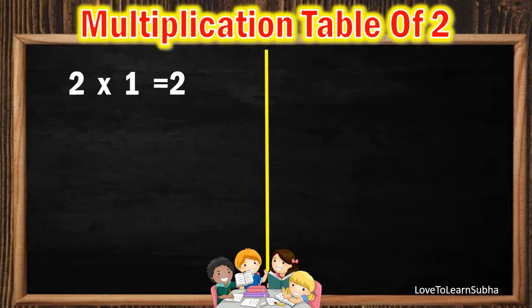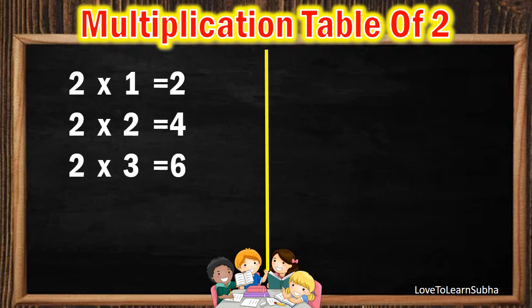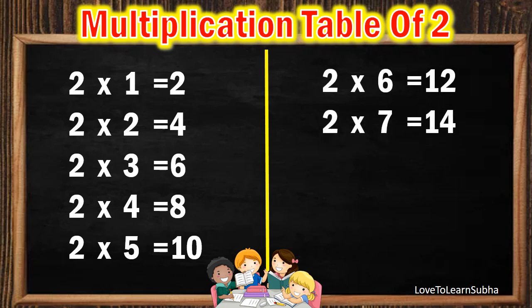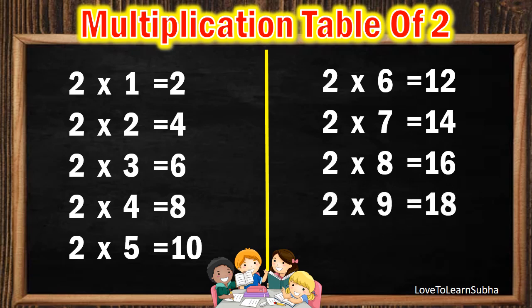2 1s are 2, 2 2s are 4, 2 3s are 6, 2 4s are 8, 2 5s are 10, 2 6s are 12, 2 7s are 14, 2 8s are 16, 2 9s are 18, 2 10s are 20.